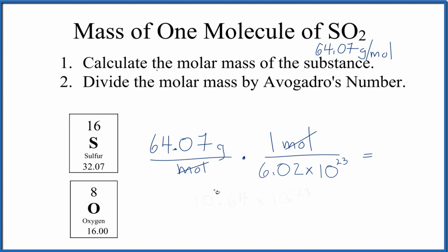When we do the math, we get 10.64 times 10 to the negative 23rd. The units are going to be grams. So that's the mass of one molecule of SO2. It's a small number because molecules are small.